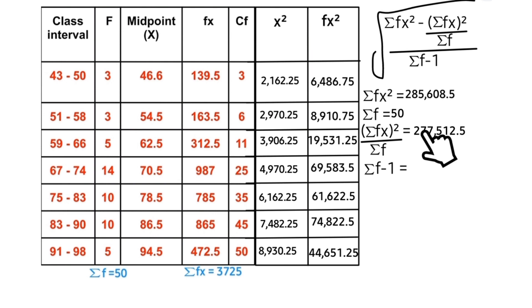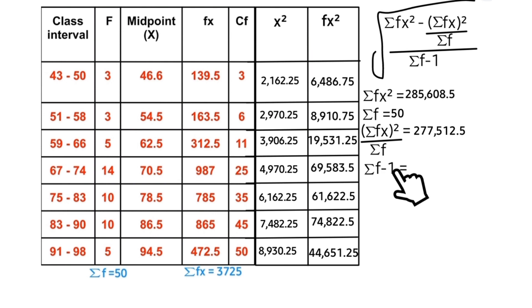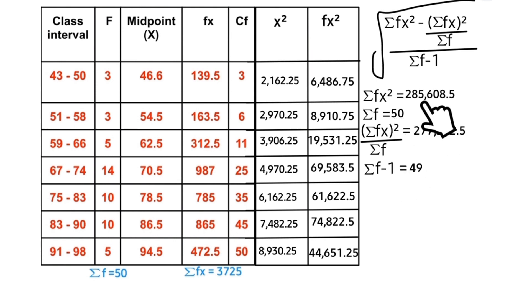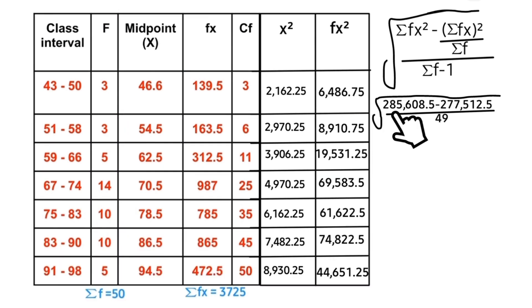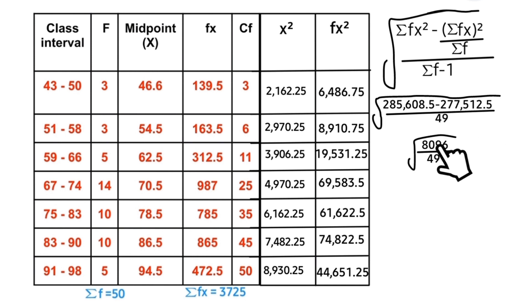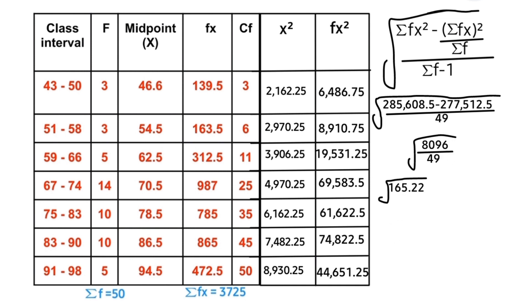Dividing 13875625 by 50 gives us 277512.5. Summation f minus 1 is 50 − 1 = 49. Substituting all these values into our formula: 285608.5 − 277512.5 = 8096. Dividing by 49 gives 165.22. The square root of 165.22 equals 12.85. So the standard deviation of the students' mass is 12.85.